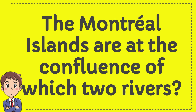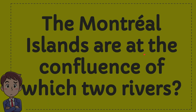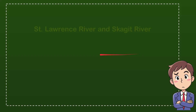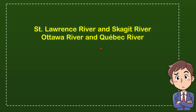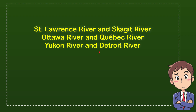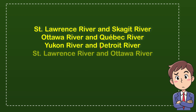The Montreal Islands are at the confluence of which two rivers? Here are the options: Option 1 is Saint Lawrence River and Skagit River. Option 2 is Ottawa River and Quebec River. Option 3 is Yukon River and the Troy River. Option 4 is Saint Lawrence River and Ottawa River. From these four options, what do you think? Which one is the correct answer?